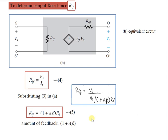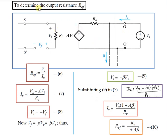Next, we determine the output resistance ROF. We set the input voltage Vs to zero and apply a test voltage Vx between the output terminals OO'. The input SS' is short-circuited, and a voltage Vx is applied at the output. If Vx produces a current Ix, then ROF = Vx / Ix, given as equation number 6. For the output loop, applying KVL: Ix = (Vx − A·Vi) / R0, denoted as equation number 7.